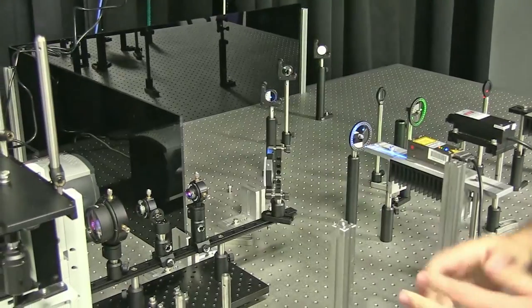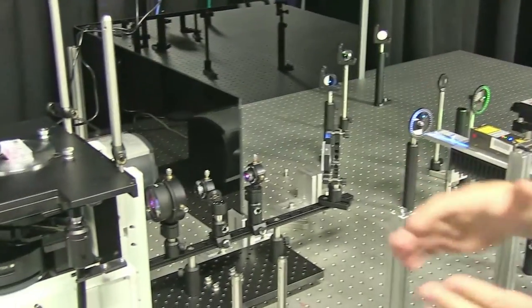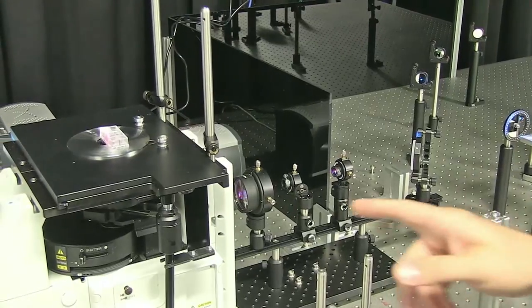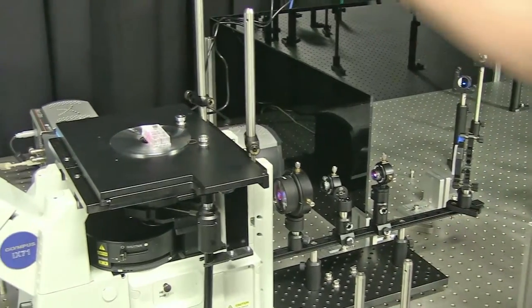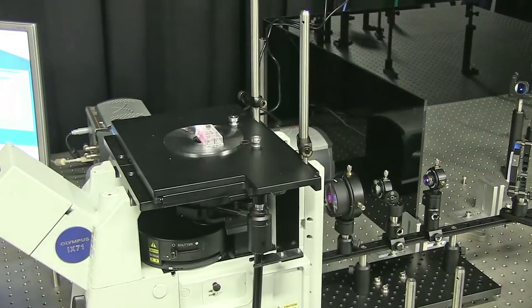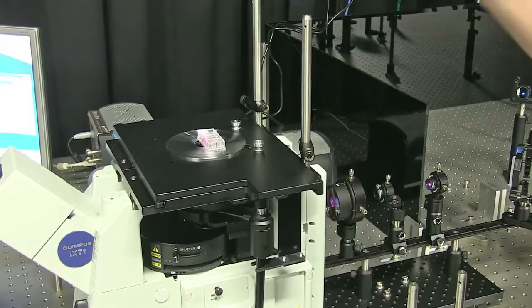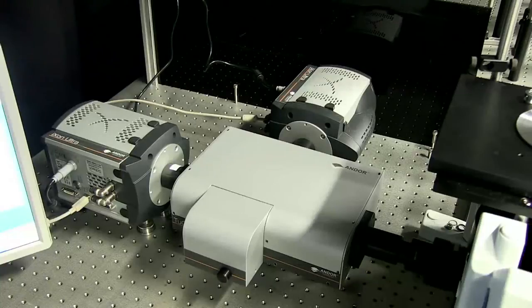These lenses here allow us to expand the beam and then focus it to the back focal plane of the objective. Light comes off another dichroic and into the sample which is mounted on top here. Fluorescence from the sample is collected back through the same objective and then steered around onto one or both of these EMCCD cameras here.